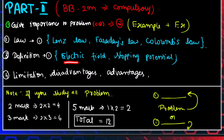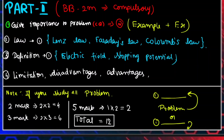For example: electric field, electric field line, stopping potential — learn all of these from the book pack. Also learn all of the limitations, advantages, disadvantages, and properties. List out the characteristics and properties. If you want to learn all of the details, you can learn all of them.